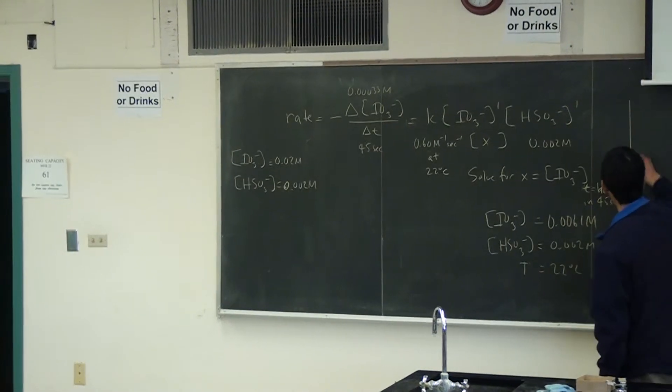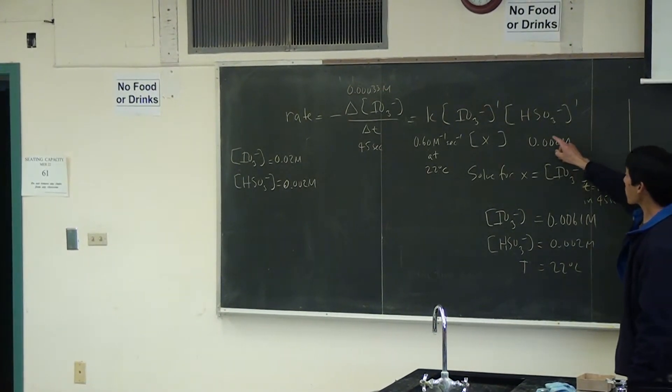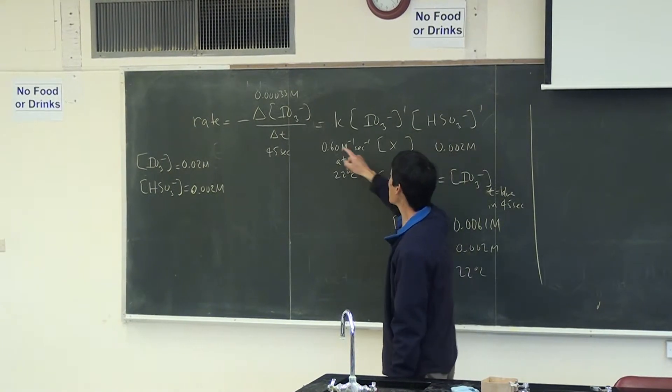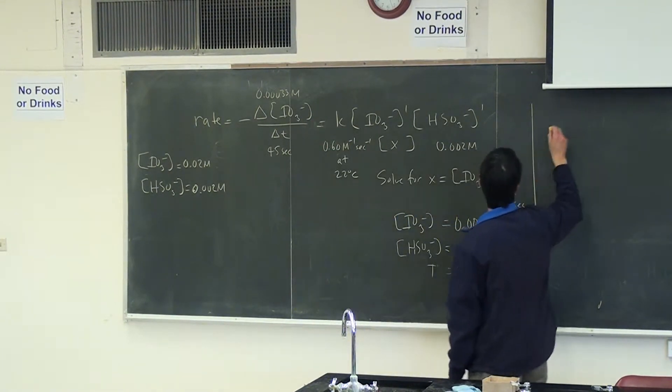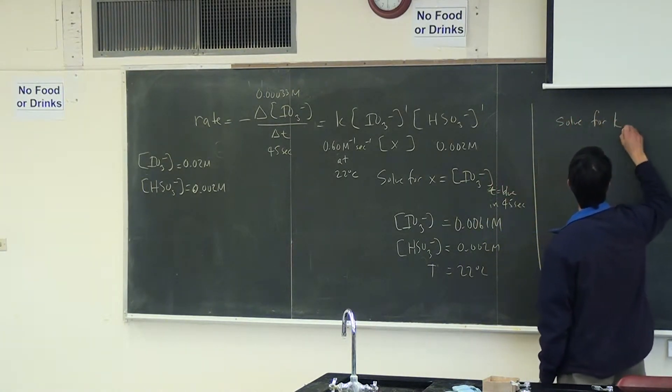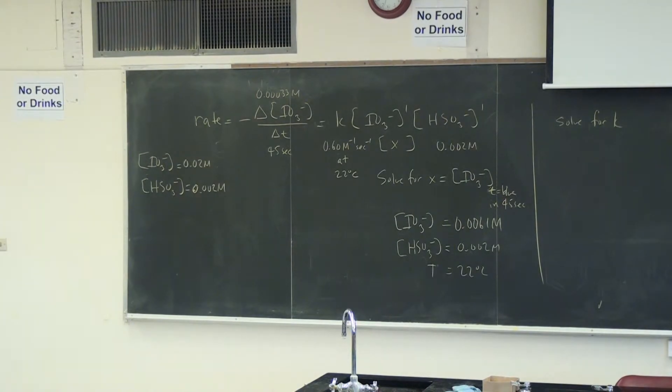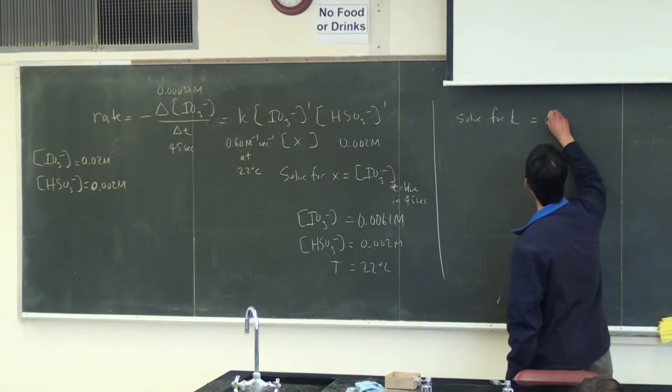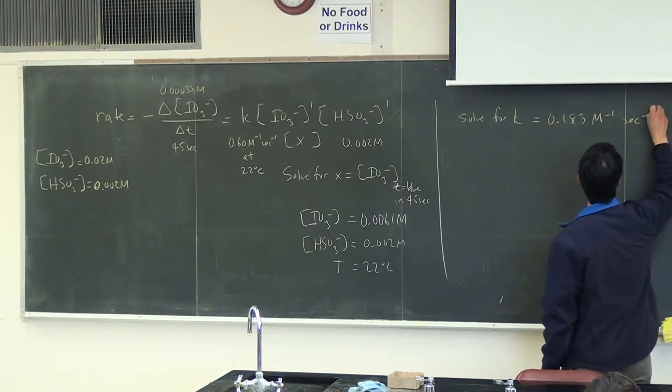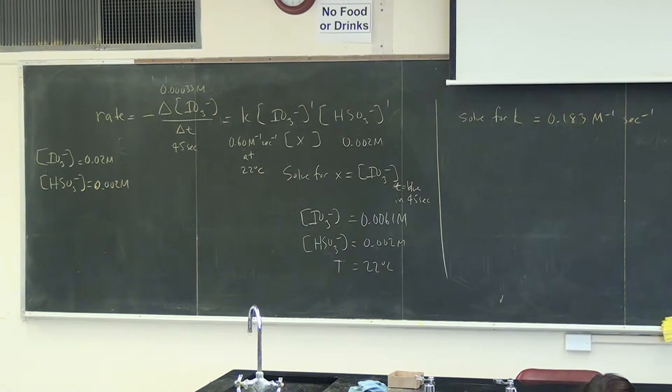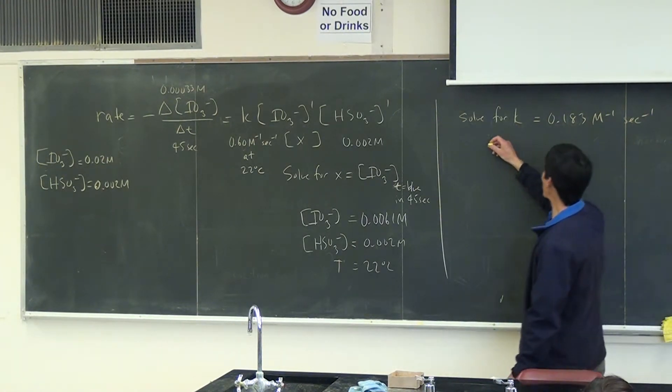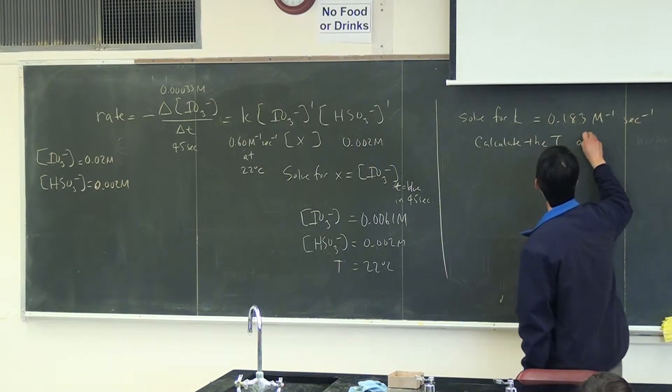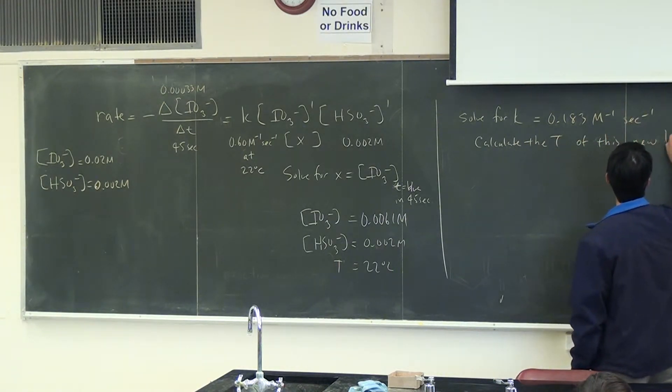Okay, so the second way to do this is to use this equation. Assume that IO3 minus is 0.02 molar, HSO3 minus is 0.002 molar. Assume that these two are the same and then solve for K. Okay, so if you solve for K, you would get, let's see, if you solve for K, I got 0.183, molar to the minus one, seconds to the minus one. Now note that K changes with temperature.